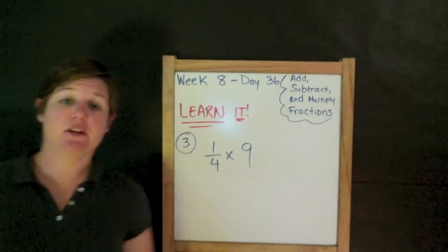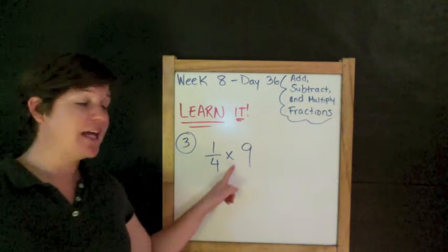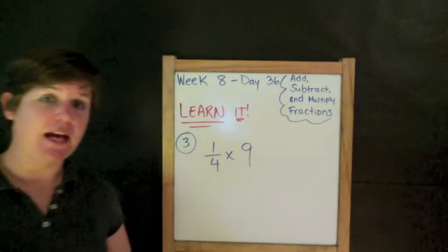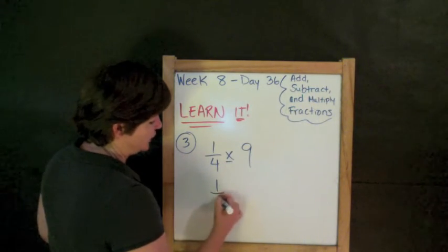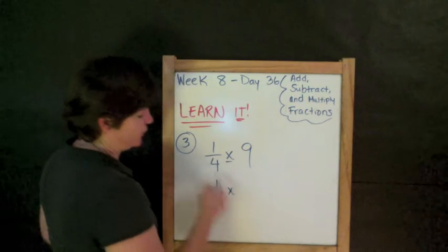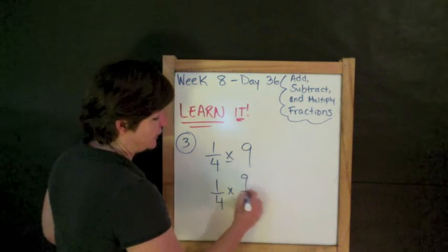When you add or subtract, your denominators match. When you multiply like a boss, multiply across. But first, you need to do something. So, I'm multiplying. I'm going to change these to two fractions. ¼, same thing. And this 9 is really 9 over 1.